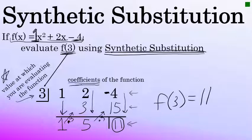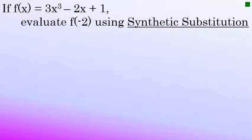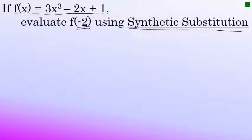We'll now do one more example from start to finish of evaluating a function using synthetic substitution. For our final example, we'll consider f of x to be 3x to the third minus 2x plus 1, and we'll evaluate f of negative 2. The synthetic substitution process begins with taking the value at which we're evaluating the function — negative 2 — and putting it in half of a box, which will be the beginning of the first row of our problem.